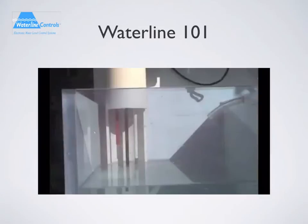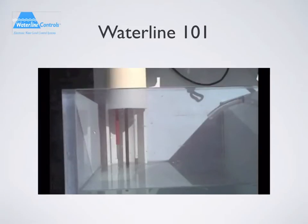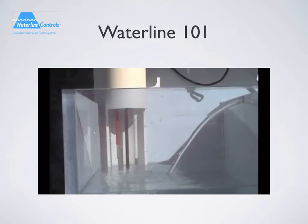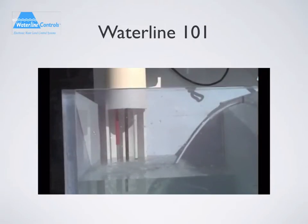Here we have a Waterline Controls model in action. This is a WLC 3000 sensor wired to its controller. This model's sensor consists of three probes. The software will fill the tank to a specific level, then turn off the valve. What you're seeing is water moving away from the white probe on the sensor, which turns on the fill valve. The controller will run a six-second timer before activating the fill valve to ensure accuracy. Once the water hits the red probe, the controller turns off the valve. It is that simple.